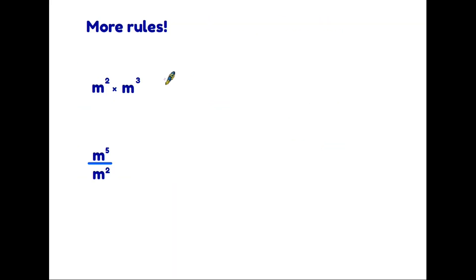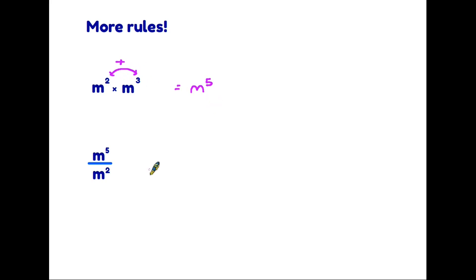And we also have to consider the law of indices. Here we have the letter m squared and we are multiplying by m to the power three. The laws of indices tell us that if we are multiplying two letters with powers, we don't actually multiply at all — instead we add the powers. So m² times m³ actually equals m to the five; it is simply two plus three. And the opposite is also true if we are dividing: m to the power five divided by m to the power two means we subtract the powers, so five minus two is three, giving us m to the power three.